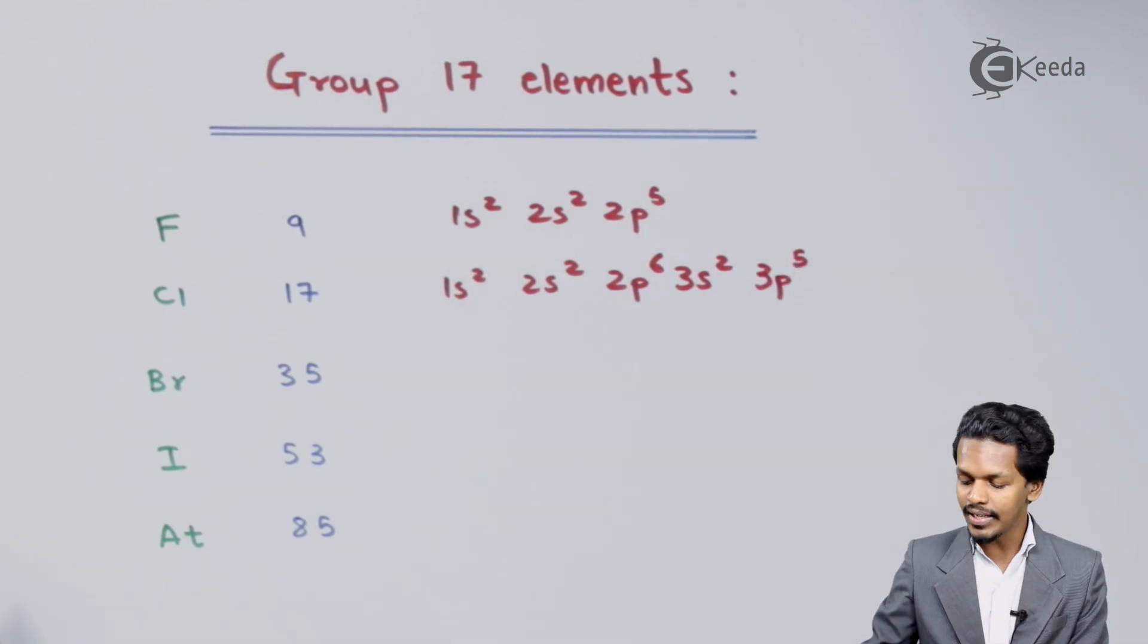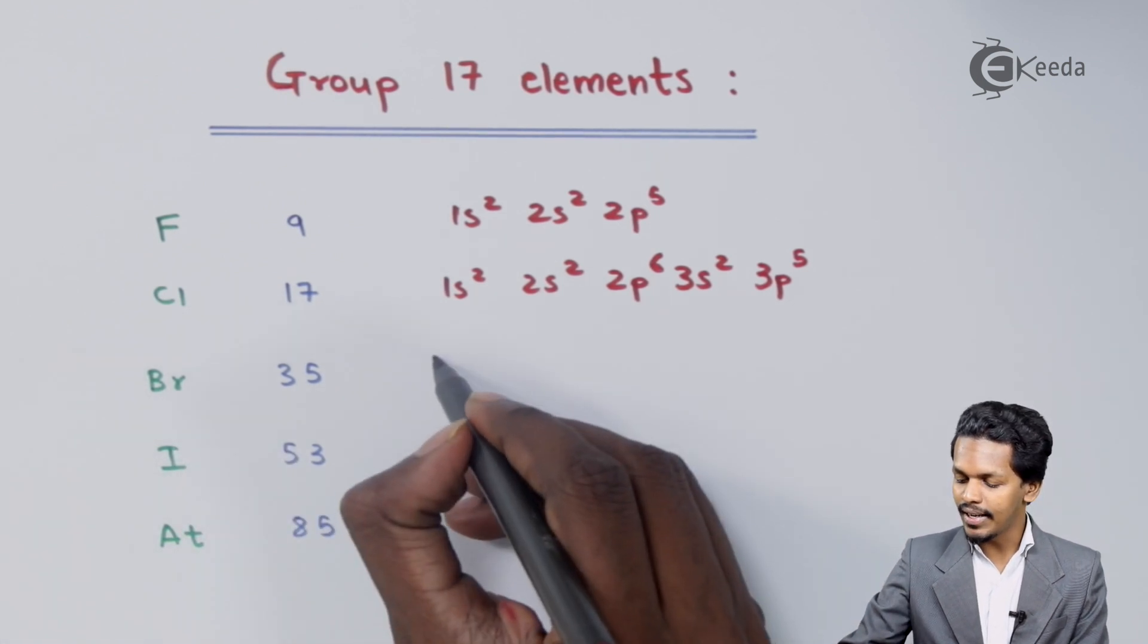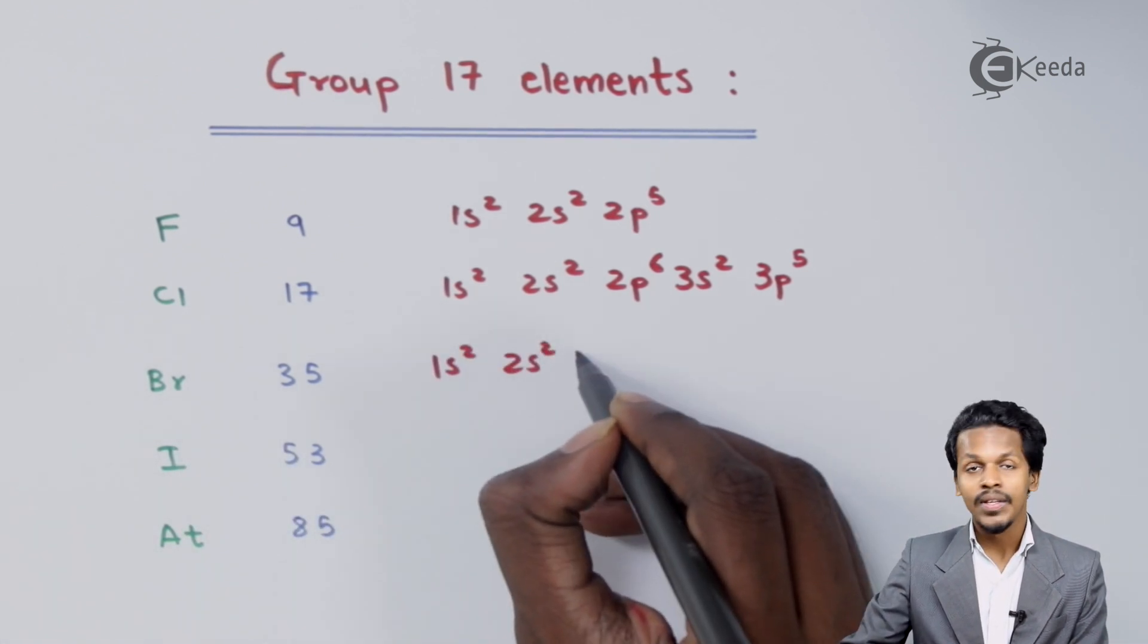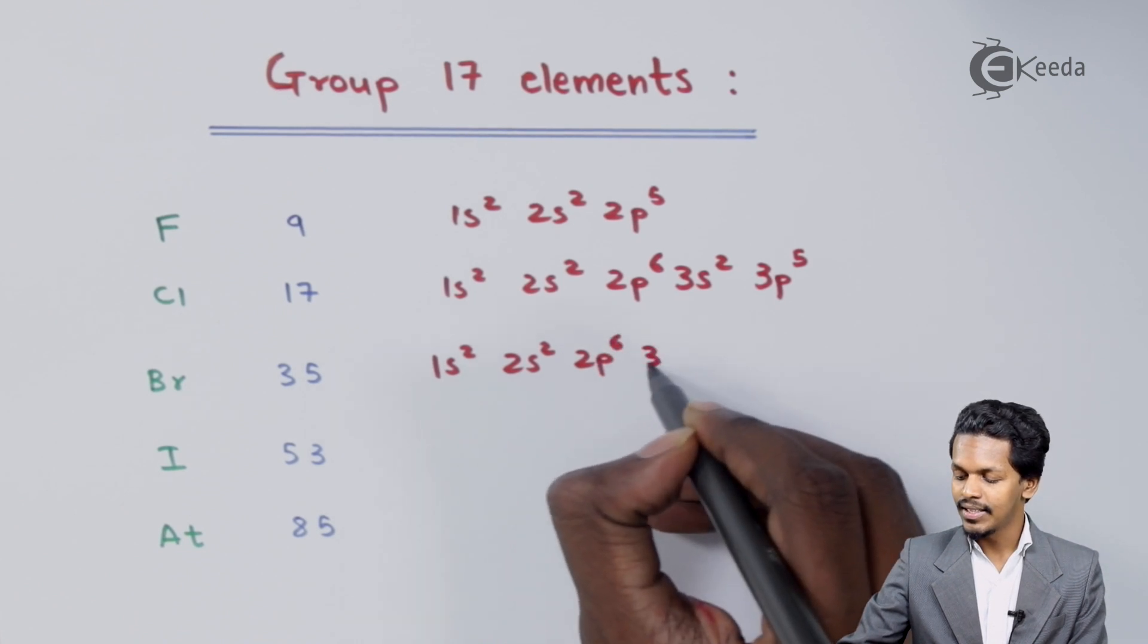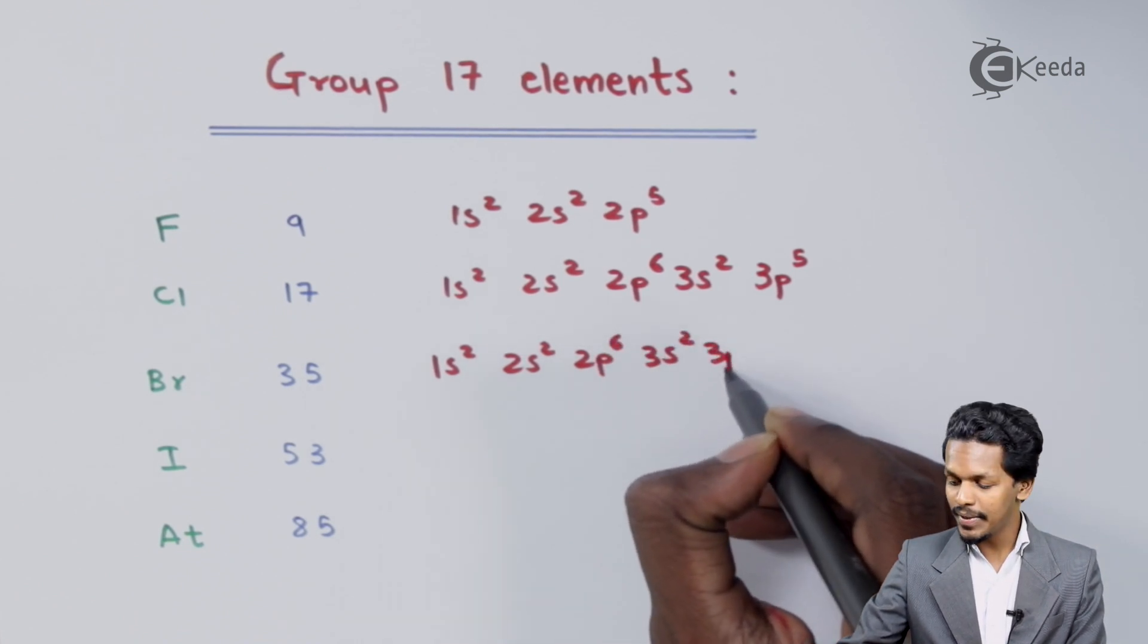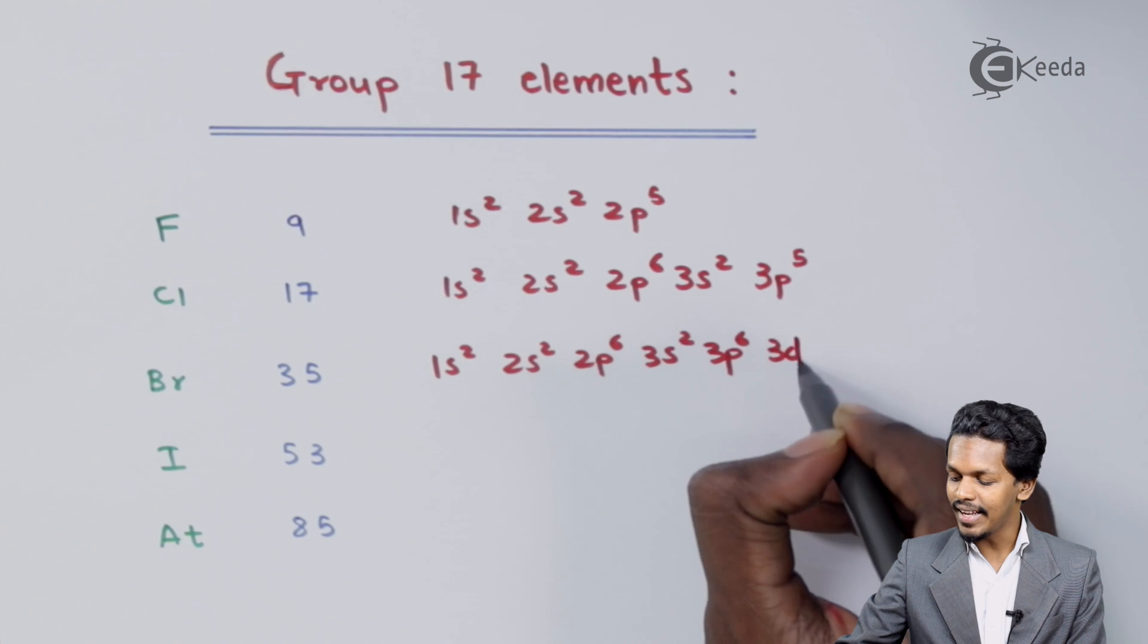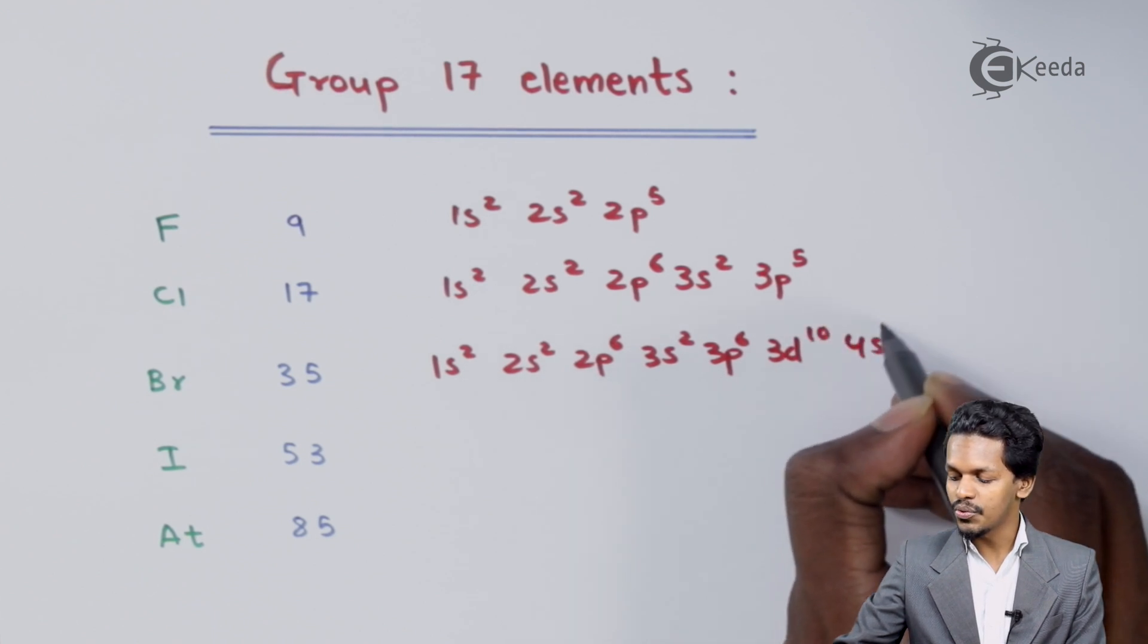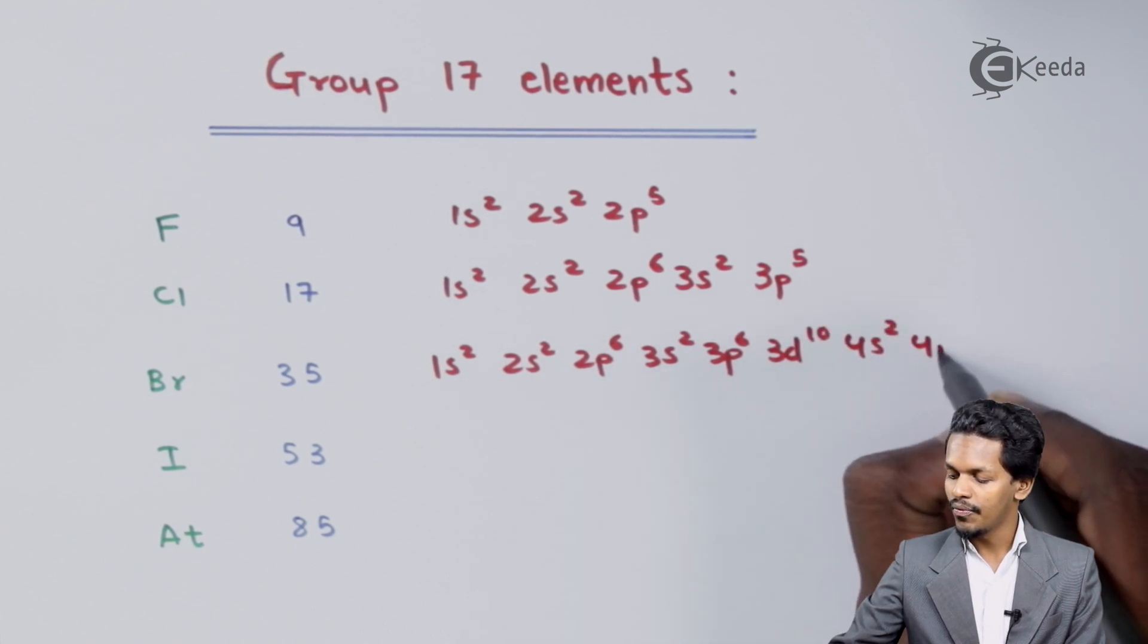Let me try another one, Bromine. I could write it as 1s² 2s² 2p⁶ 3s² 3p⁶ 3d¹⁰ 4s² 4p⁵.